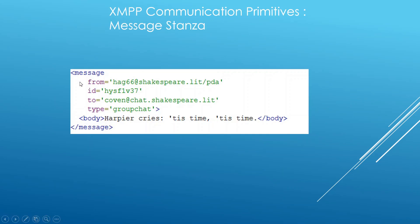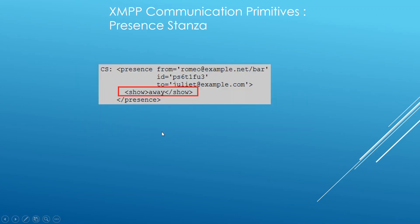Here you see a message stanza, and just like we said, it is an XML tag. You have the name of the tag here, and inside the tag we have some attributes — we're going to say more on these later. And we have a body here. This is a message tag. When you want to send a message to somebody, this is what your XMPP software sends.